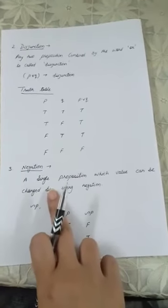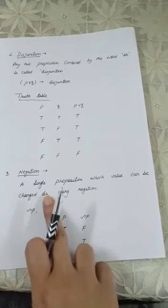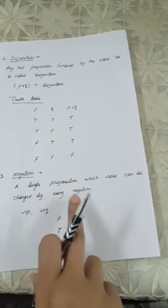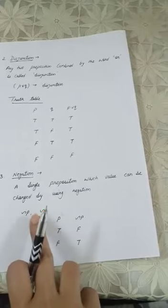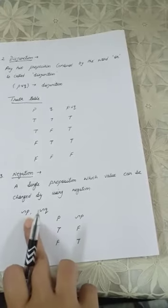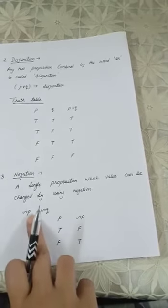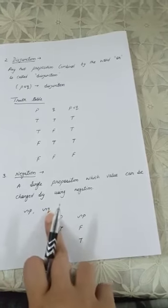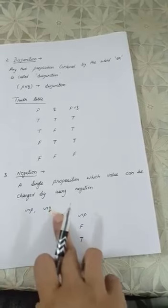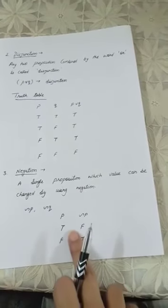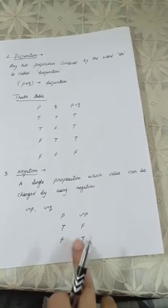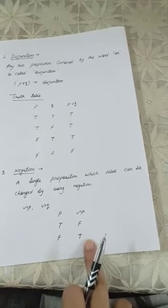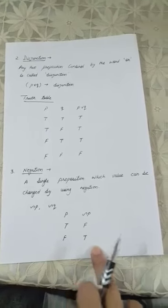Now come to negation. Negation is the notation which is used to change the single proposition value. If we have taken a single proposition P and make it as negation P, or maybe Q, whenever you give the value true it will be false, and when it is false it will give the value true. Clear? Yeah.